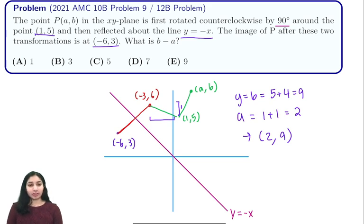In this problem, another way to get this point is to maybe draw it on graph paper or draw an accurate graph, and you'll see that your reflected point is (2,9). But this is the way that I like to do it. Now all we have to do is find b minus a. That's 9 minus 2, which is 7. That's D, so our answer is going to be D for this problem.